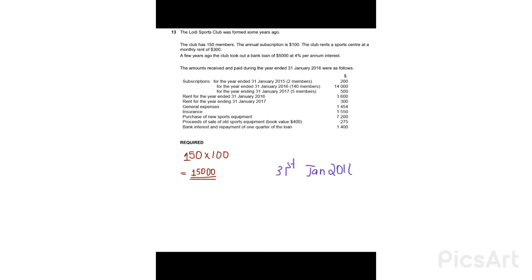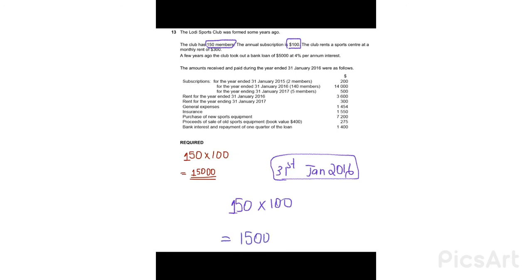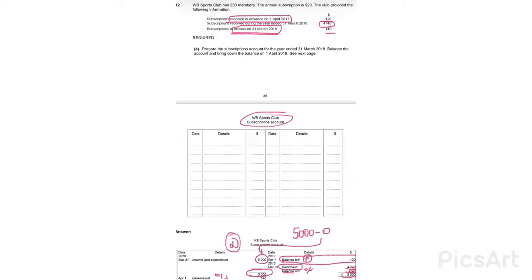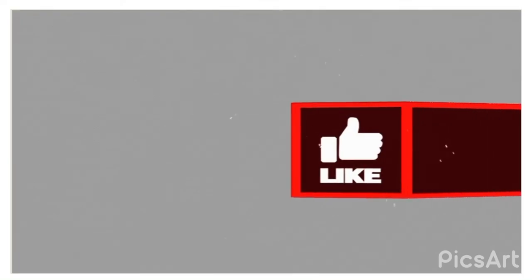Question 7: find the subscriptions amount for the year ended 31st January 2016. This is straightforward — no adjustments needed. There are 150 members, each paying $100 annual subscription. 150 × 100 = 15000. The subscriptions received by the sports club total $15000.